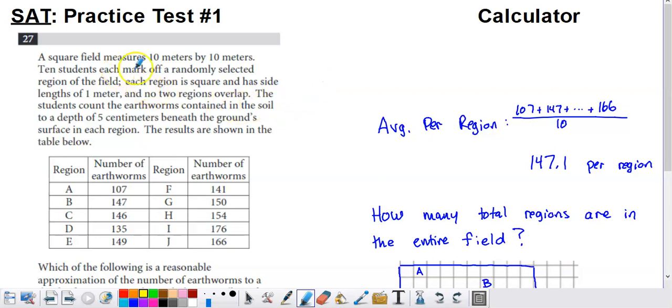So we've got a square field, measures 10 meters by 10 meters. We've got 10 students. They each mark off a randomly selected region of the field. Each of the regions is a square and has dimensions 1 meter by 1 meter. None of the regions overlap.